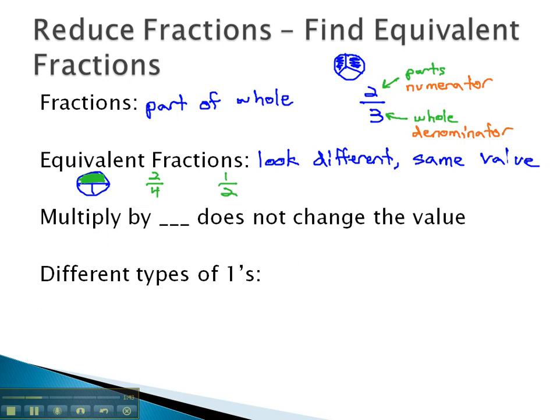The way we can find these equivalent fractions is we multiply by one, because multiplying by one doesn't change the value. If I take five and multiply by one, the answer still is five.